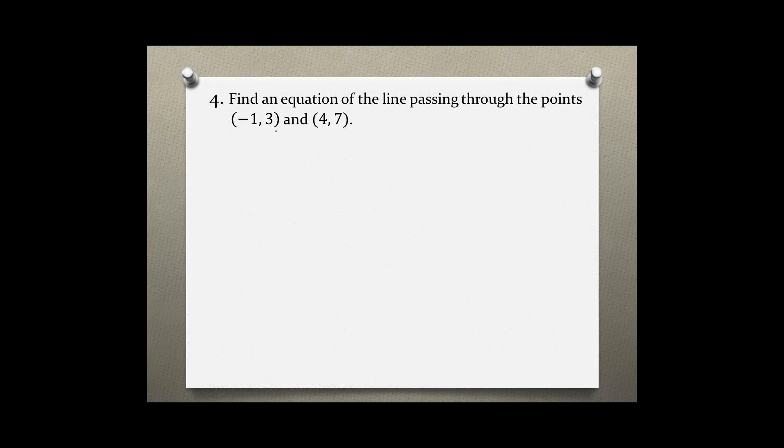We have two points given and we are asked to find an equation. We should use the slope formula first to find the slope, which is y2 minus y1 over x2 minus x1. Label your points and then plug these points into your formula.